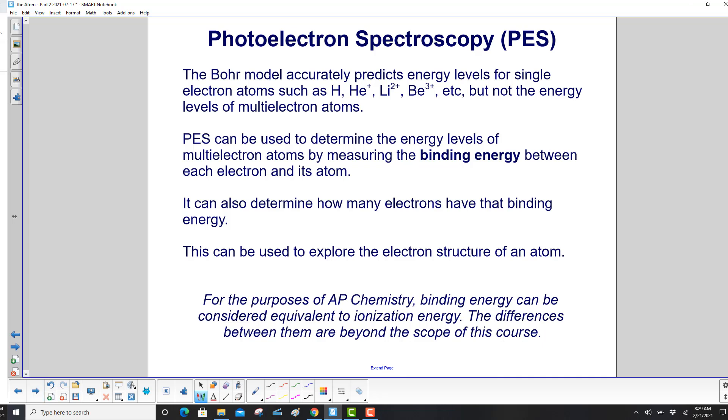The Bohr model accurately predicts energy levels for single electron atoms such as hydrogen, helium plus one, lithium plus two, etc. But not the energy levels of multi-electron atoms.